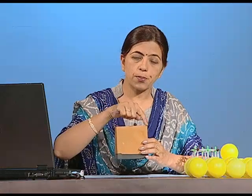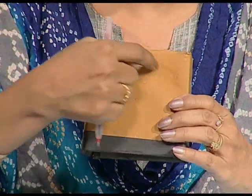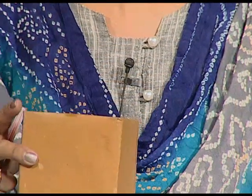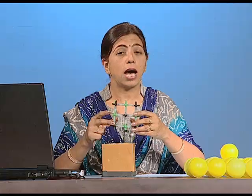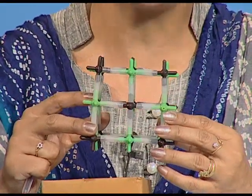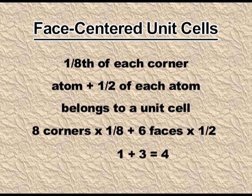In the FCC unit cell, atoms are at the corners — 8 corners × (1/8) = 1 atom — and atoms are at the center of each face. The face-center atom is shared by two unit cells, so 6 faces × (1/2) = 3. Therefore, 1 + 3 = 4. The total number of atoms per unit cell in FCC is 4.